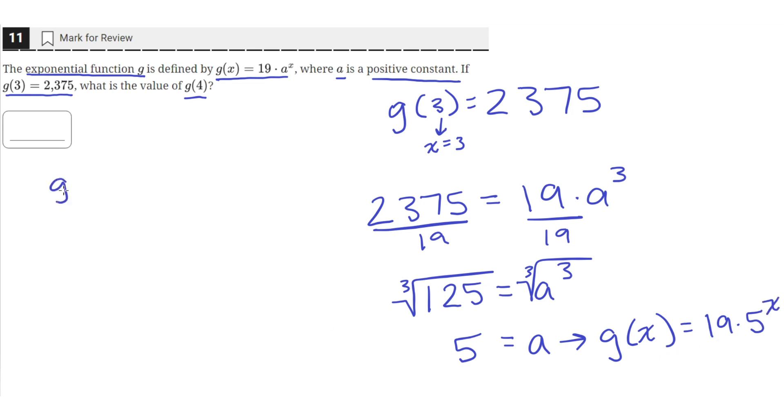So then to find the value of g of 4, we just plug in x equals 4 into our equation that we just found. When we plug in x equals 4, we get 19 times 5 raised to the fourth power, which if you put into your calculator is just equal to 11,875. So the value of g of 4 is 11,875, which is the answer.